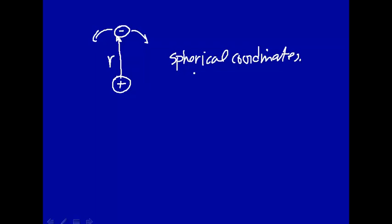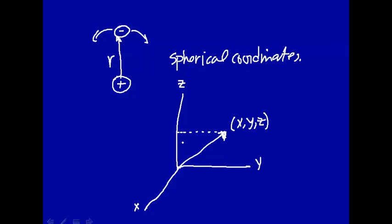Now spherical coordinates were first introduced when we talked about particle on a sphere. Let's introduce them again here, just to review. This is the x direction, this is the y, and this is the z. These are Cartesian coordinates. And what we want to do is describe a vector in three dimensions. This vector will have a position x, y, and z away from the origin. So that's Cartesian coordinates.